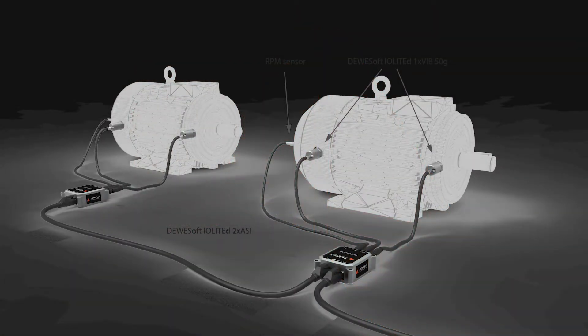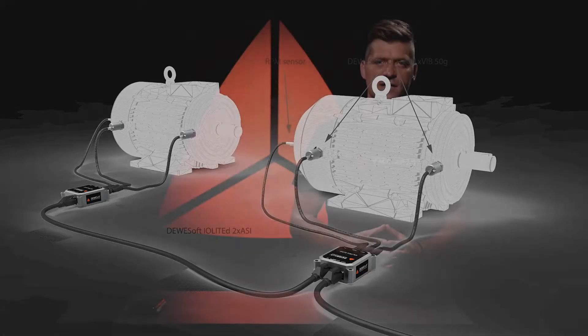Devices can be daisy-chained by a single cable for data, power, and synchronization. There can be up to 100 meters between the devices. EtherCAT protocol ensures perfect synchronization down to 1 microsecond, independent of cable length.